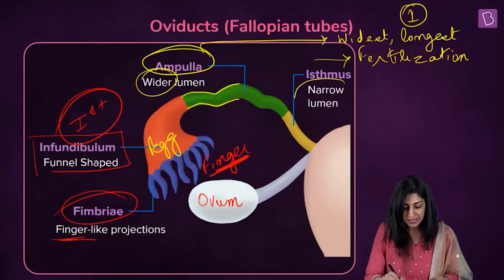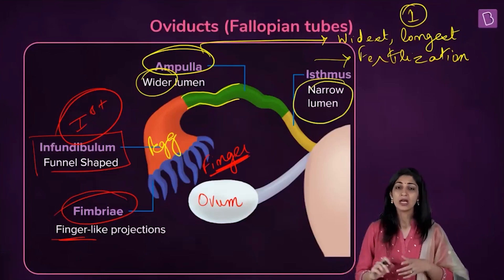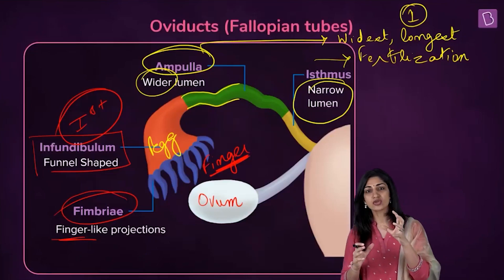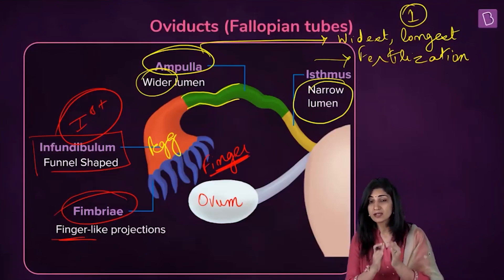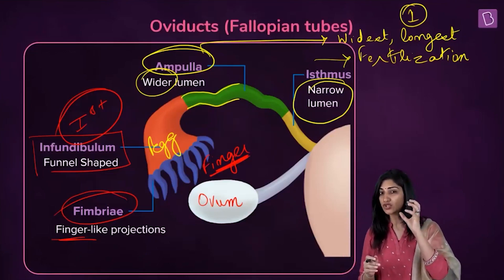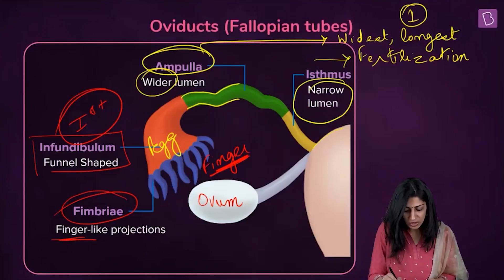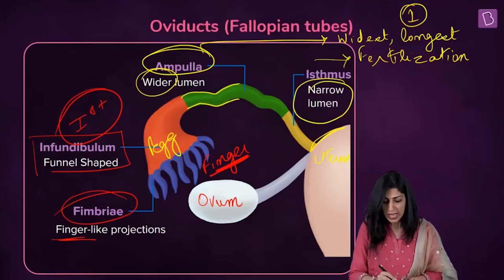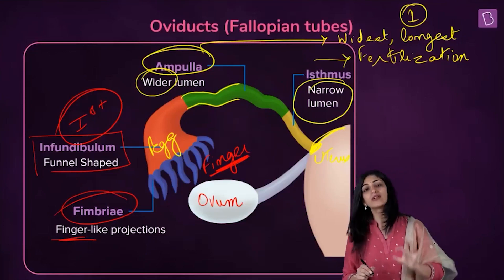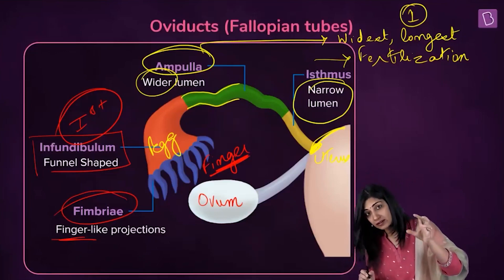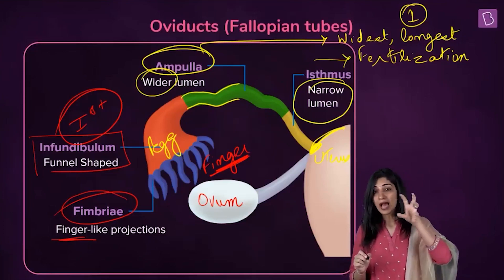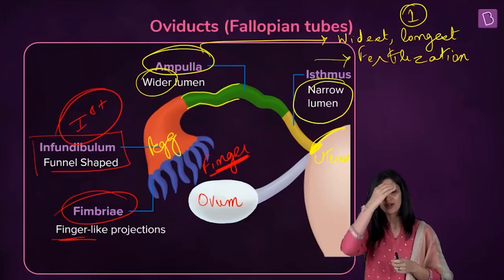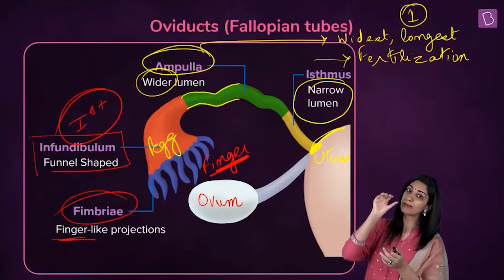After the ampulla there is a very narrow area called the isthmus. In English, isthmus means an adjoining or midpoint structure. The isthmus is truly a midpoint between the uterus and the fallopian tube — it connects the fallopian tube to the uterus, the womb, where the final implantation and placement of the baby occurs.